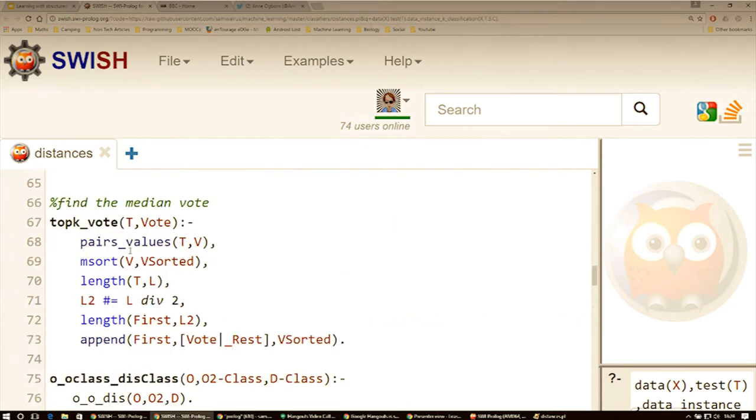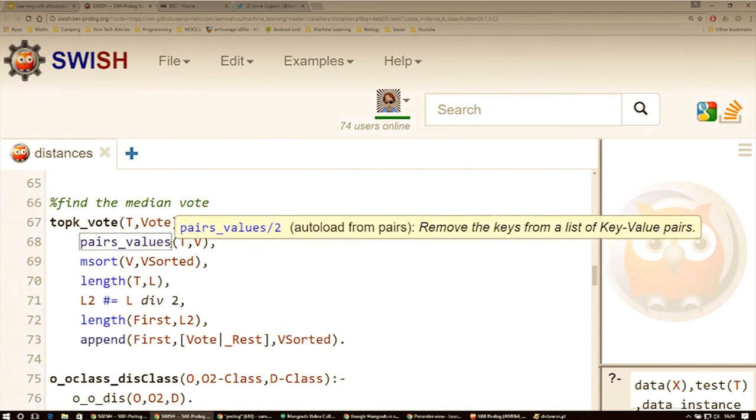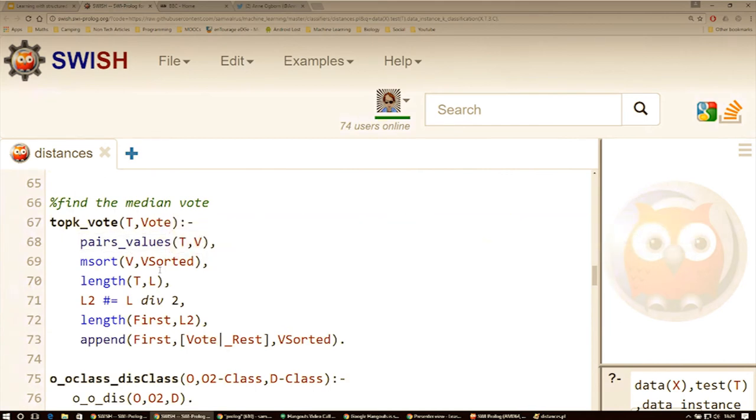So the vote just works like this. We're going to get the values out of our pairs. We're going to sort those values. We're going to introduce a division, taking the lower number, and we're just going to take that middle value. And because we've only got two classes, we can just take that middle value.